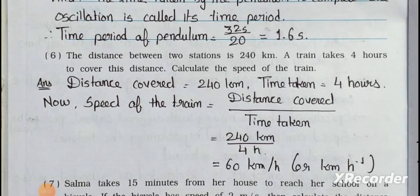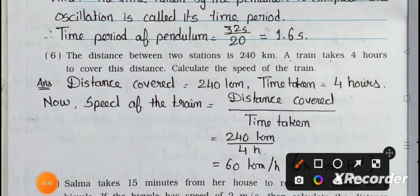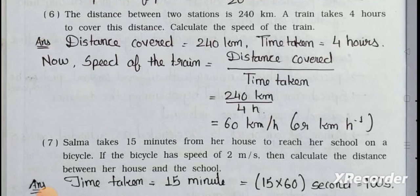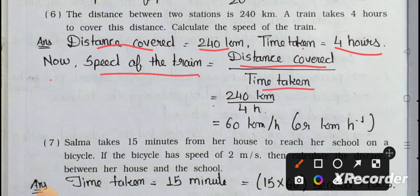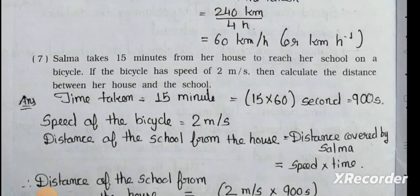Question number six: The distance between two stations is 240 km. A train takes four hours to cover this distance. Calculate the speed of the train. Distance covered = 240 km, time taken = 4 hours. Speed = distance ÷ time = 240 ÷ 4 = 60 km per hour, or 60 km h⁻¹.